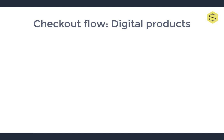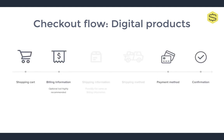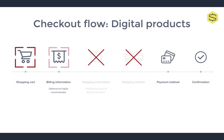The checkout flow for selling digital products is obviously much more simple than for physical products. Shipping information and shipping method are both removed, making the whole process from cart to confirmation much faster. So the checkout process goes from six steps to four: shopping cart, billing information, payment method, and confirmation. Everything goes by much faster and all of the fields in those categories are exactly the same.